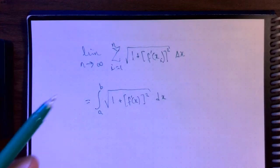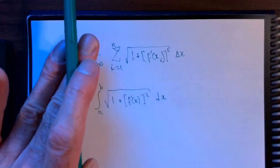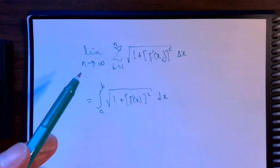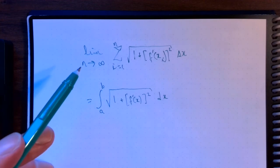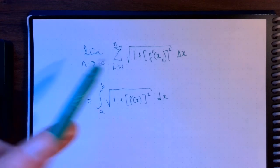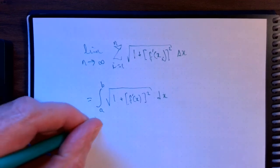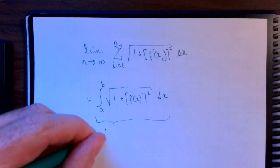So without the limit, that is giving us an approximation of the arc length. When you throw in the limit, as the number of segments goes to infinity, this sum turns into an integral. And this expression gives us the arc length.